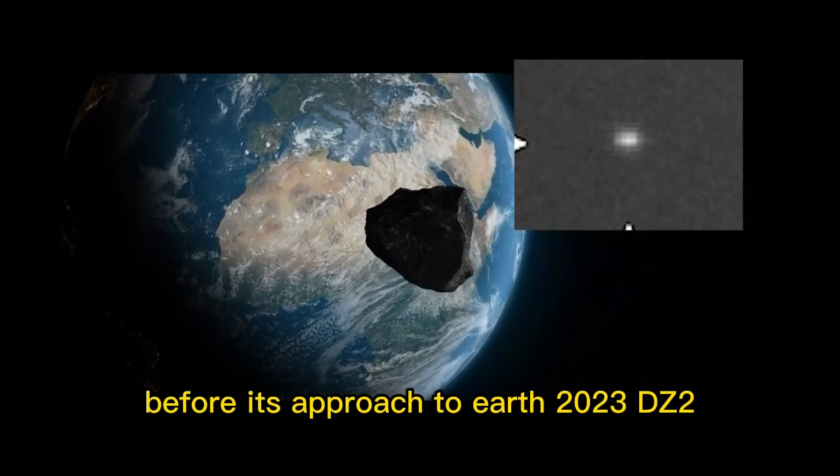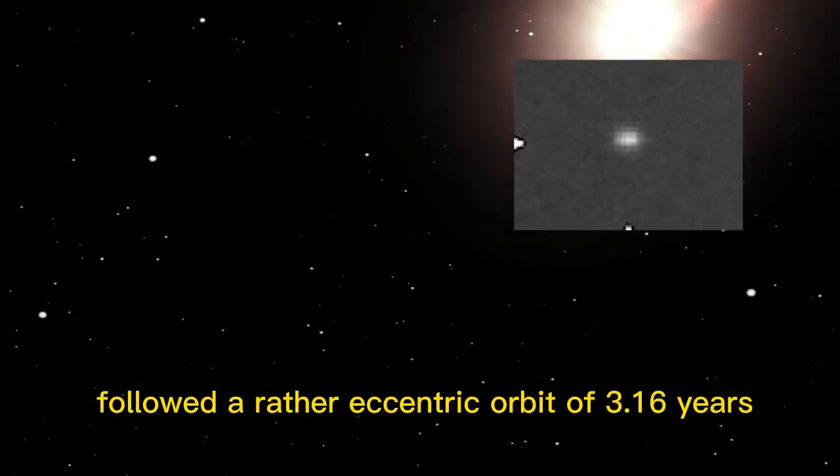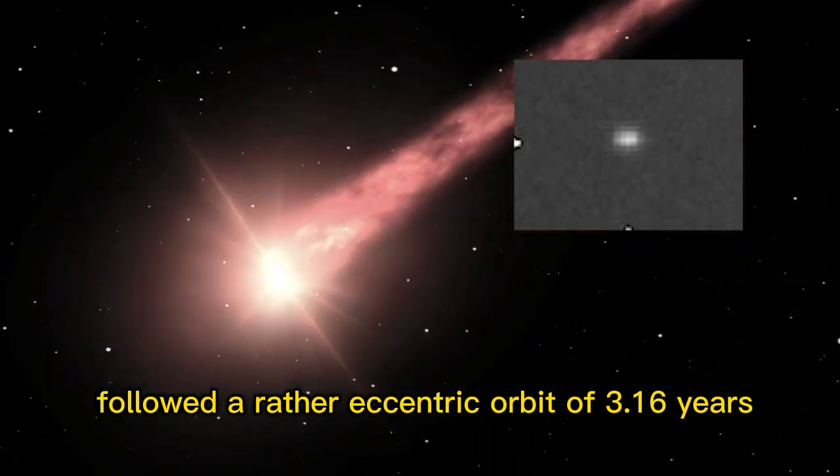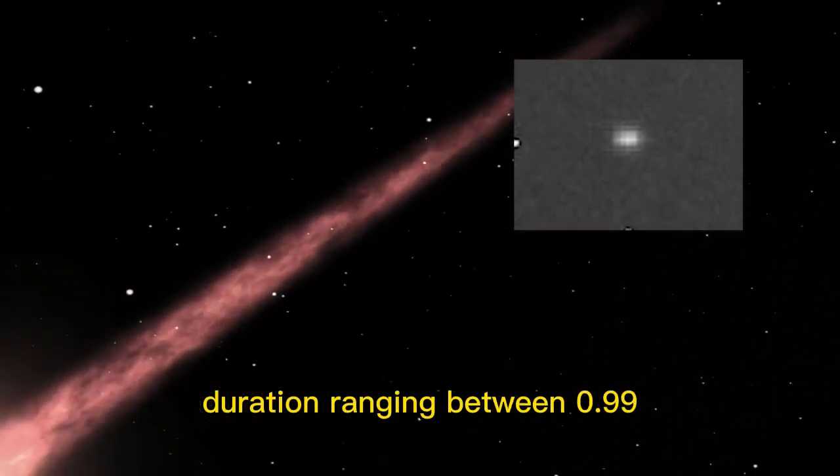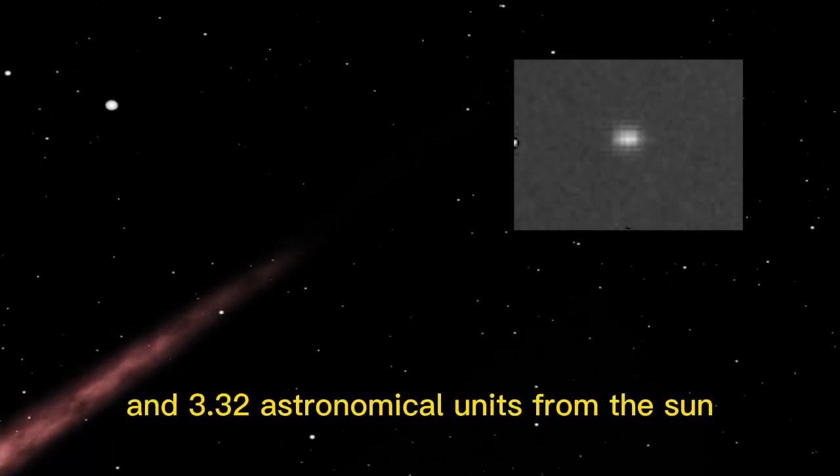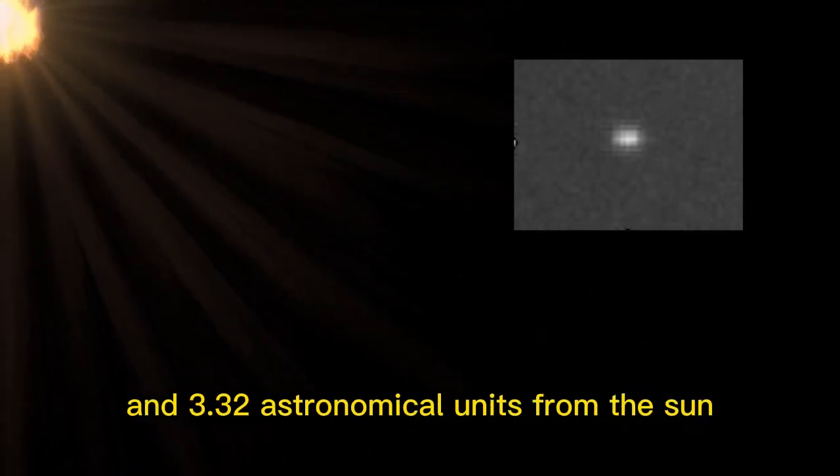Before its approach to Earth, 2023 DZ2 followed a rather eccentric orbit of 3.16 years duration, ranging between 0.99 and 3.32 astronomical units from the Sun.